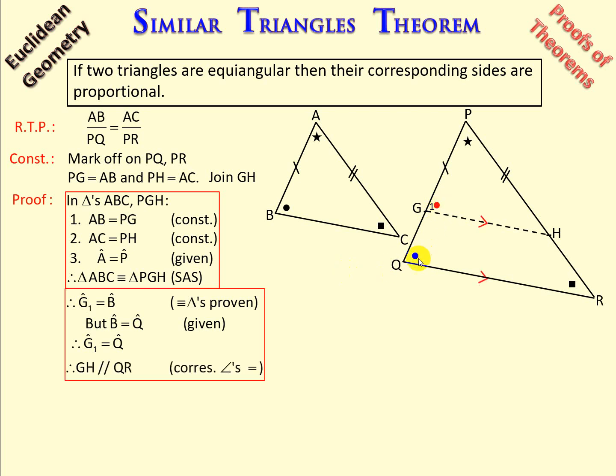But if G1 is equal to angle Q, these are corresponding angles that are equal. Therefore, we can conclude that GH is parallel to QR.